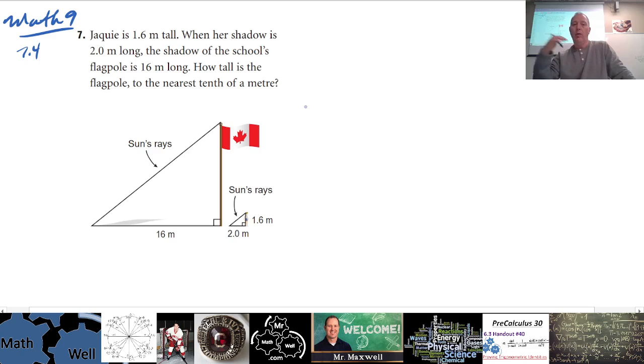Okay, so what we can assume is that the flagpole and Jackie are both standing straight up and down. As in the diagram here, this is the flagpole, and this, if you can see it, that's Jackie.